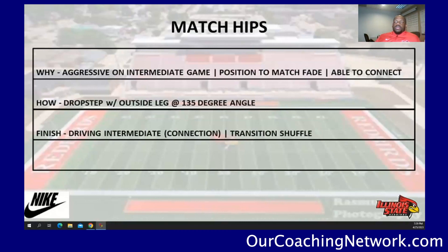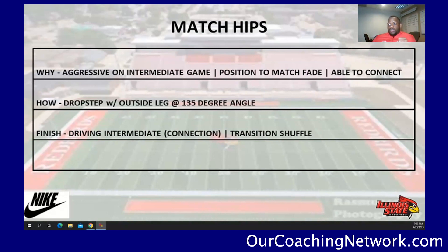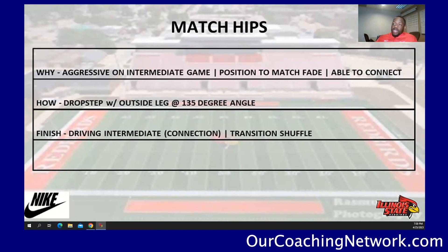The next part is going to be the matchups. Why do we use this drill? We use it because it allows us to be super aggressive on the intermediate game, and it also allows us to get in position to match the fit and match the fade. If this guy's getting ready to run vertical, I don't need to have that outside foot up — I need to have that outside foot back, and it allows us to be able to make a connection. How we do this: we're literally just going to take that outside foot and drop step it at a 135-degree angle. Then how we should finish is by driving intermediate, meaning if he's running an inside route I'm going to connect with him, or if he's running an out route I'm going to drive.